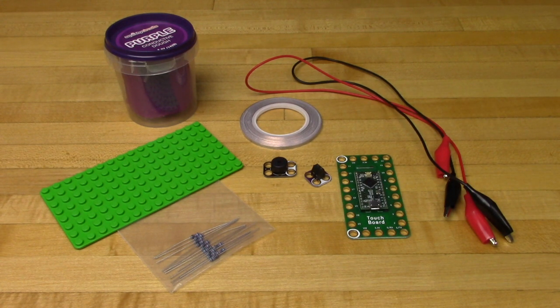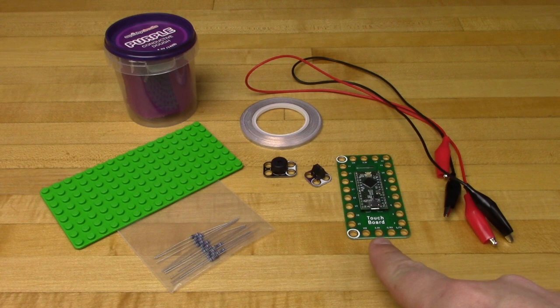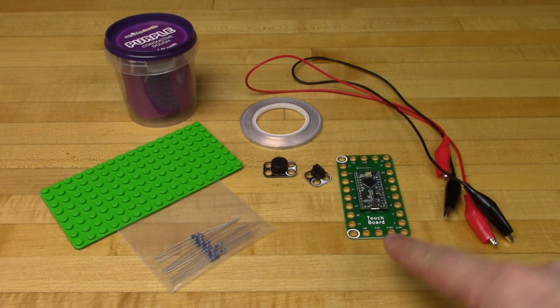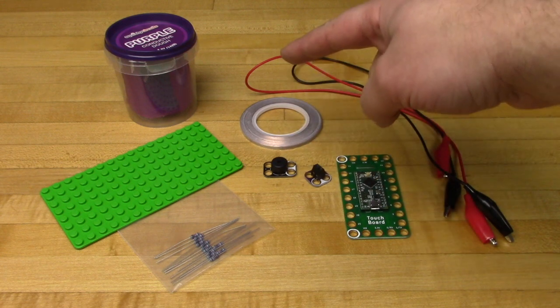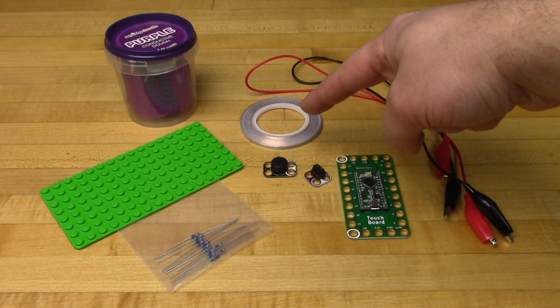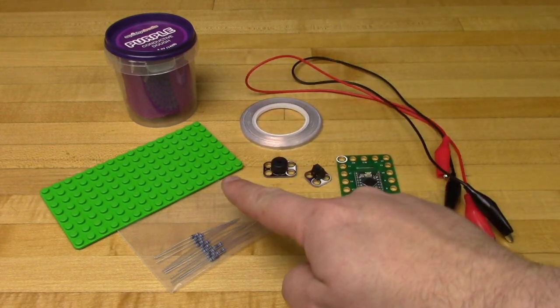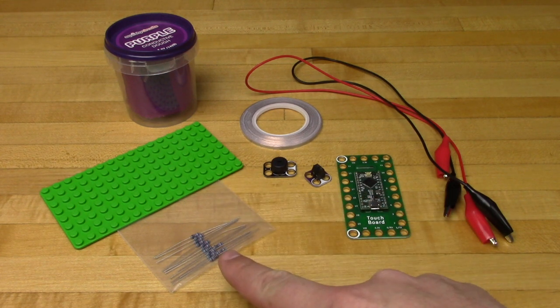To build this project, you'll need the following items: some alligator clips, either a touch board or a robotics board, a screw terminal chip, a piezo speaker chip, some nylon conductive tape, some squishy circuits dough or other dough, a Lego base plate, and some resistors.